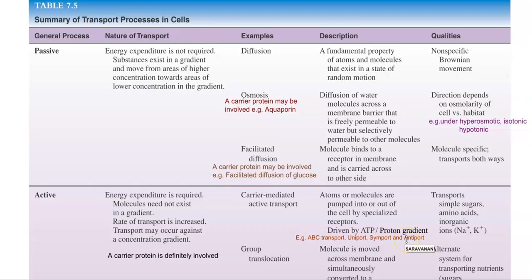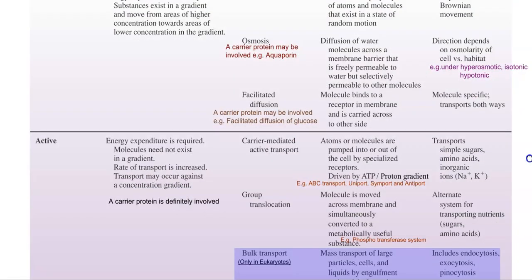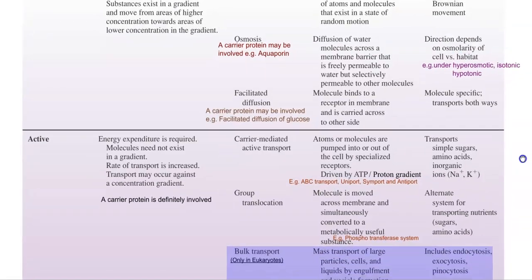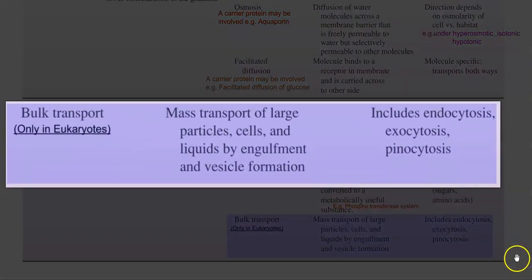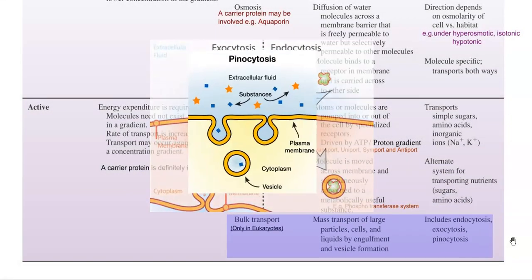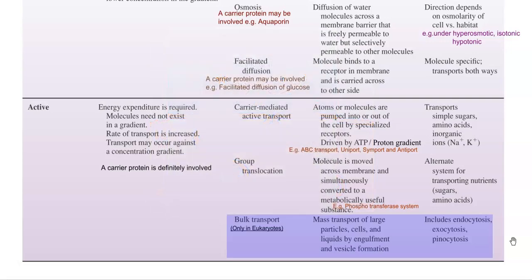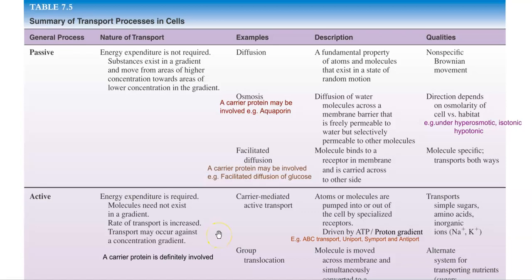This page shows a summary of transport processes that could be operating in any kind of cell. Passive transport and active transport are operational in all groups of living organisms. What is highlighted in dark blue is a form of active transport that occurs only in eukaryotic organisms — referred to as bulk transport, which is the mass transport of large particles, cells, and liquids by engulfment and vesicle formation. This includes endocytosis, exocytosis, and pinocytosis, which you may have already studied in cell biology.